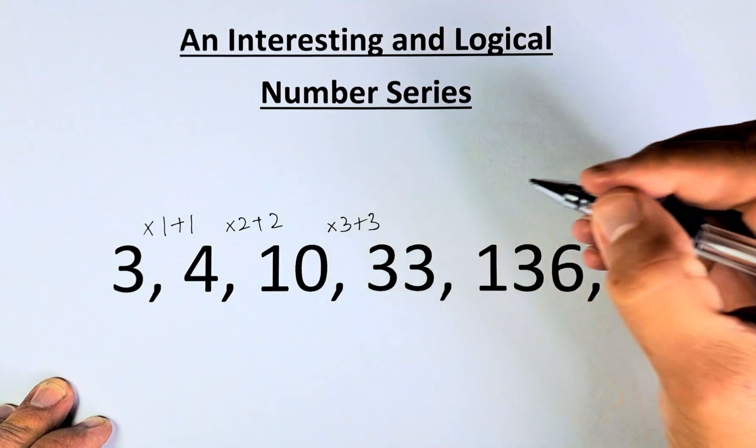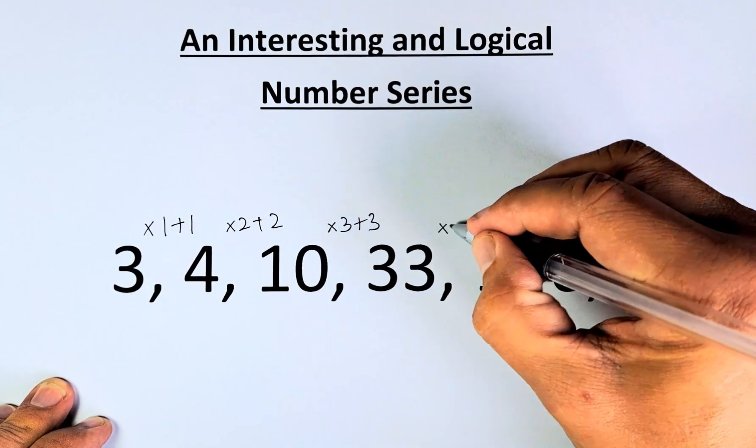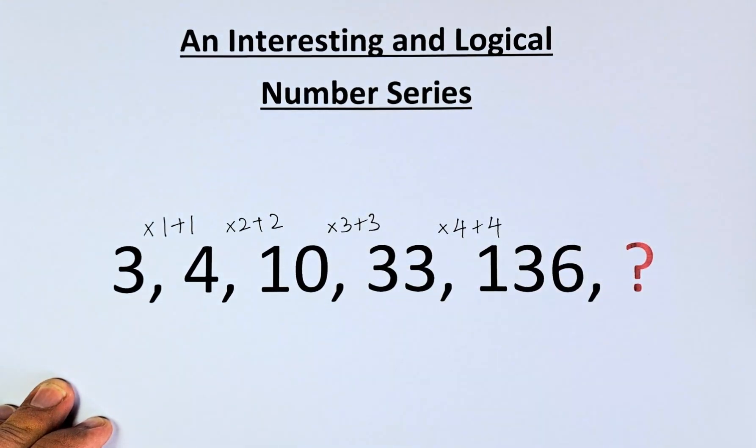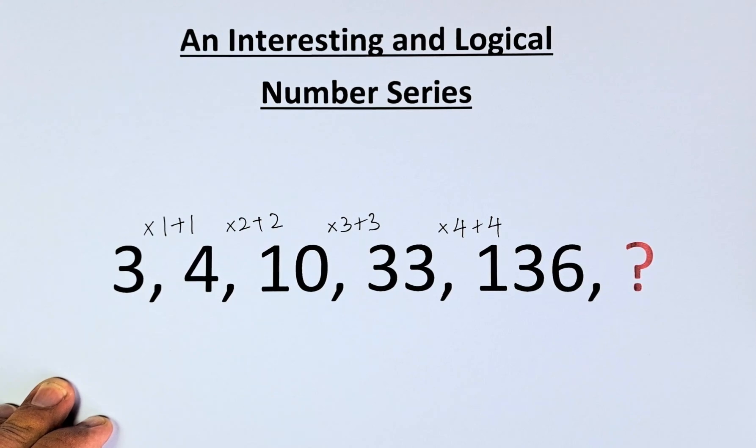And the next one is going to be 33 to 136. We're going to multiply by 4 and plus 4. So we're going to get 33 times 4 is going to be 132. 132 plus 4 is going to be 136.